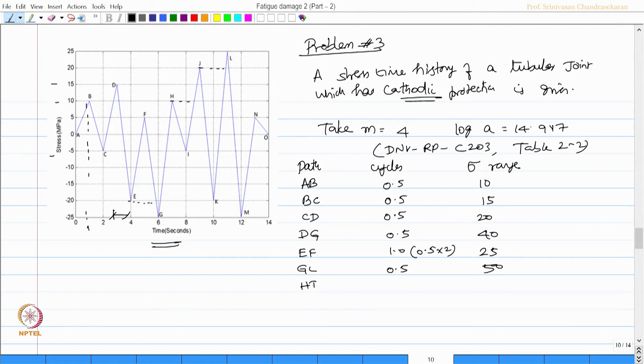Then H-I will have 1 again, the reverse cycle will be 15. J-K will again have 1 reverse cycle which is 40, because J and K minus 20 and plus 20, 40. L-M is the full cycle 0.5, 25 and 25, 50. M-N is again 0.5 of 30, because M is minus 25, N is 5, 30. Lastly N-O 0.5, which is 5.